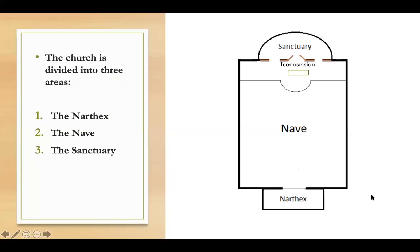The church is divided into three areas. The first area when you walk into the church is called the narthex — here's where you light the candles and say a little prayer. You then enter the second part called the nave, where we here in the United States have pews and sit during the Divine Liturgy. Towards the back of the church is the sanctuary, which is divided from the nave by something called the iconostacion. The iconostacion has three doors: a central door and two side doors, which we'll talk about in a little bit.